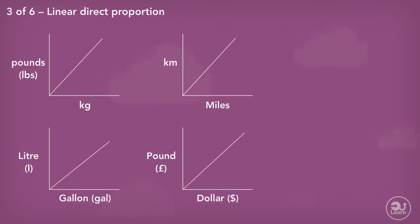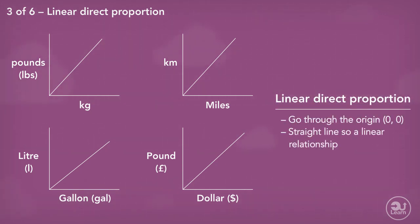Have a look at these conversion graphs. Do you notice anything that they all have in common? All these graphs are direct proportion graphs. They all start from zero, zero, and they are all straight lines. This is a defining aspect of all linear direct proportion graphs.